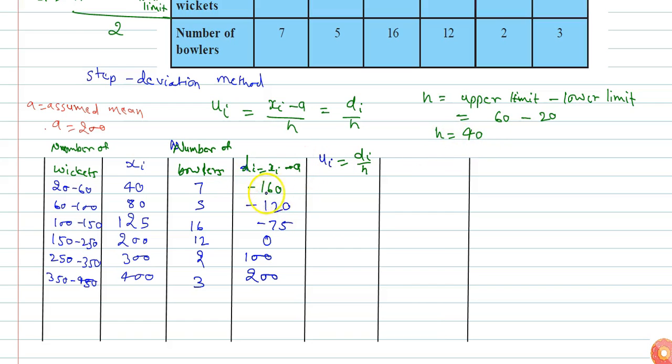Now calculate ui for each xi. ui is given by di divided by h. Here h equals 40, so minus 160 divided by 40 equals minus 4.